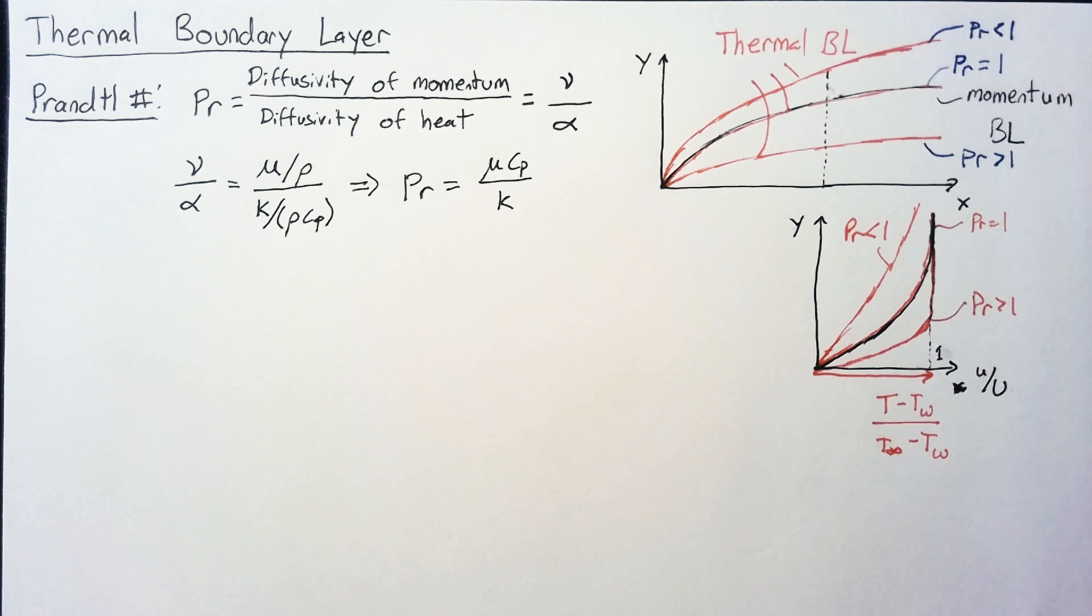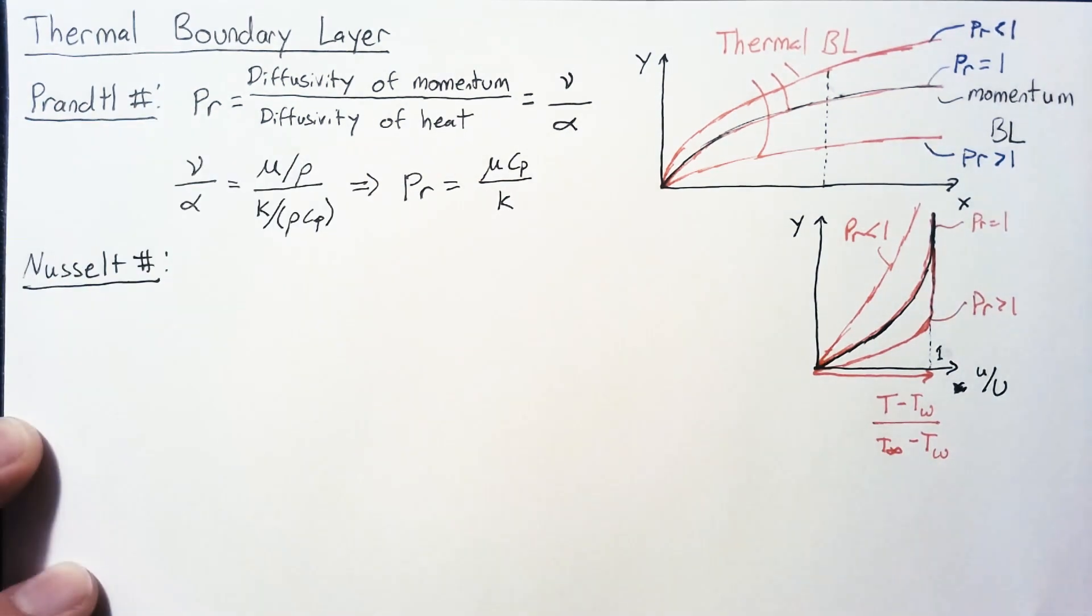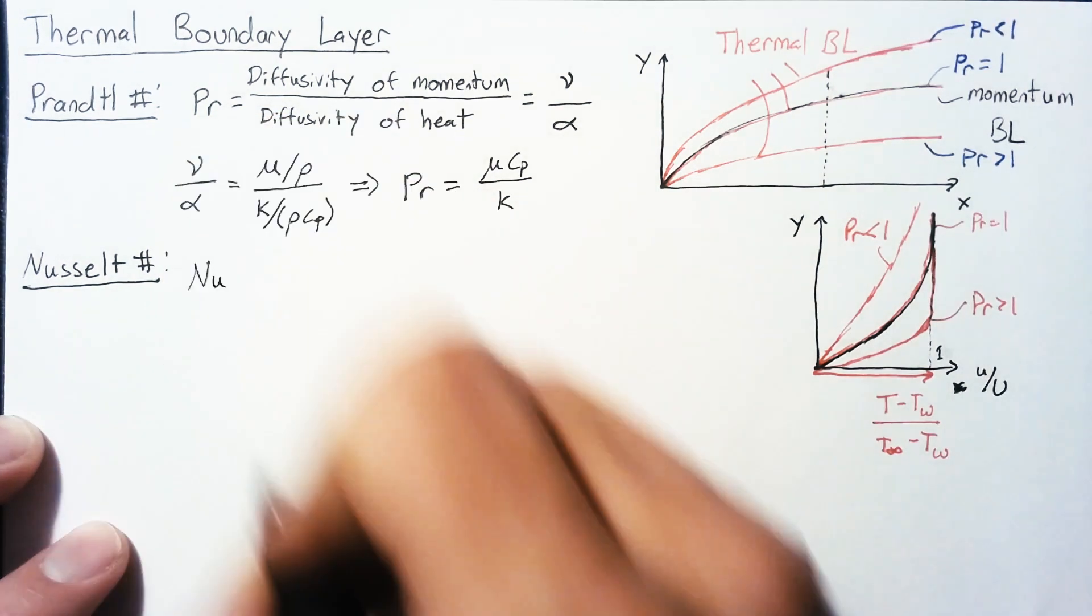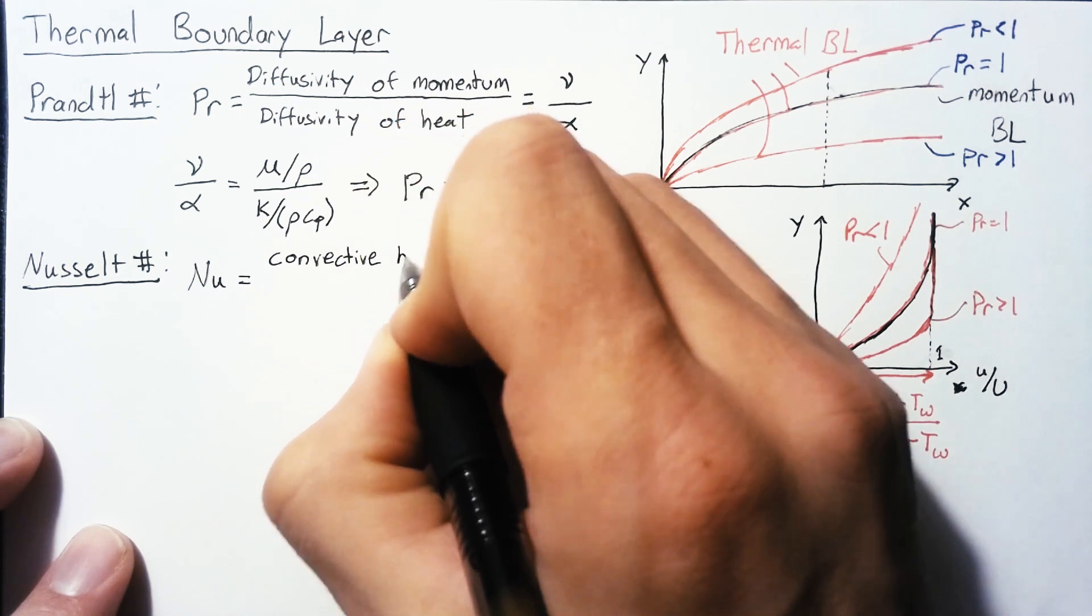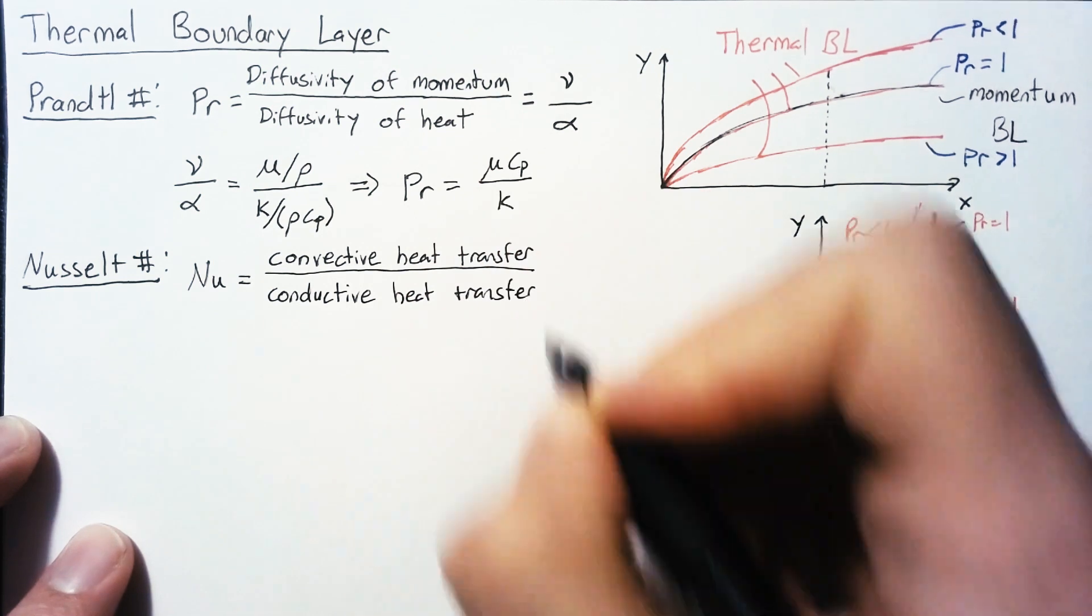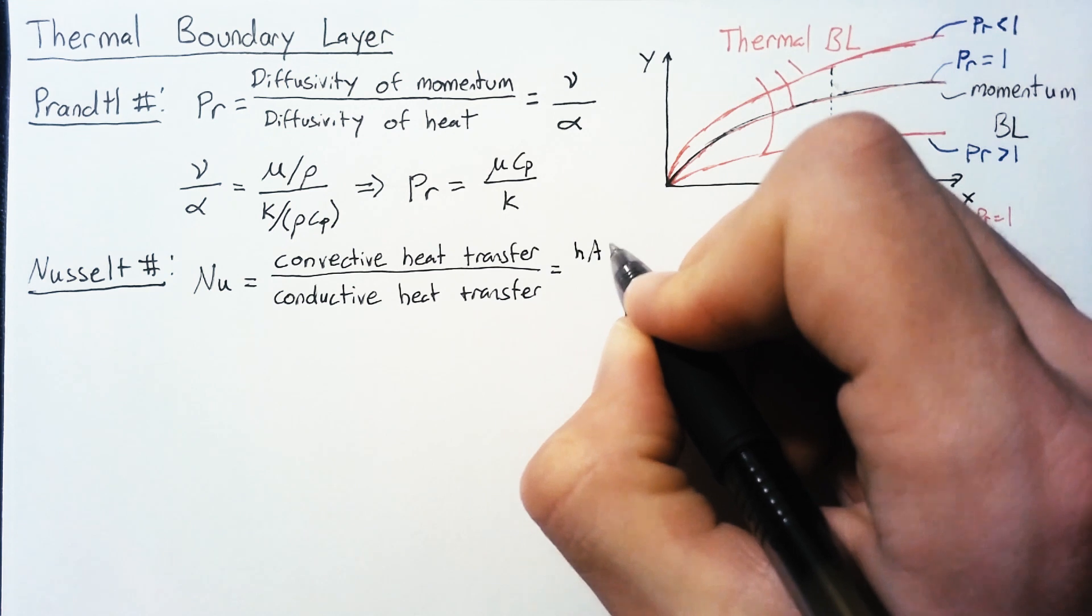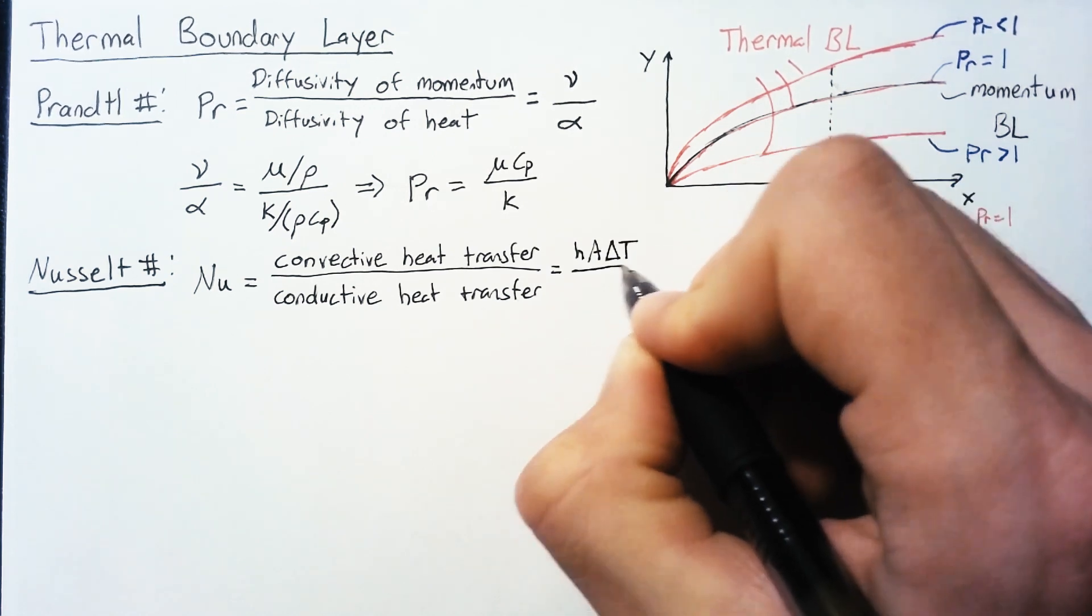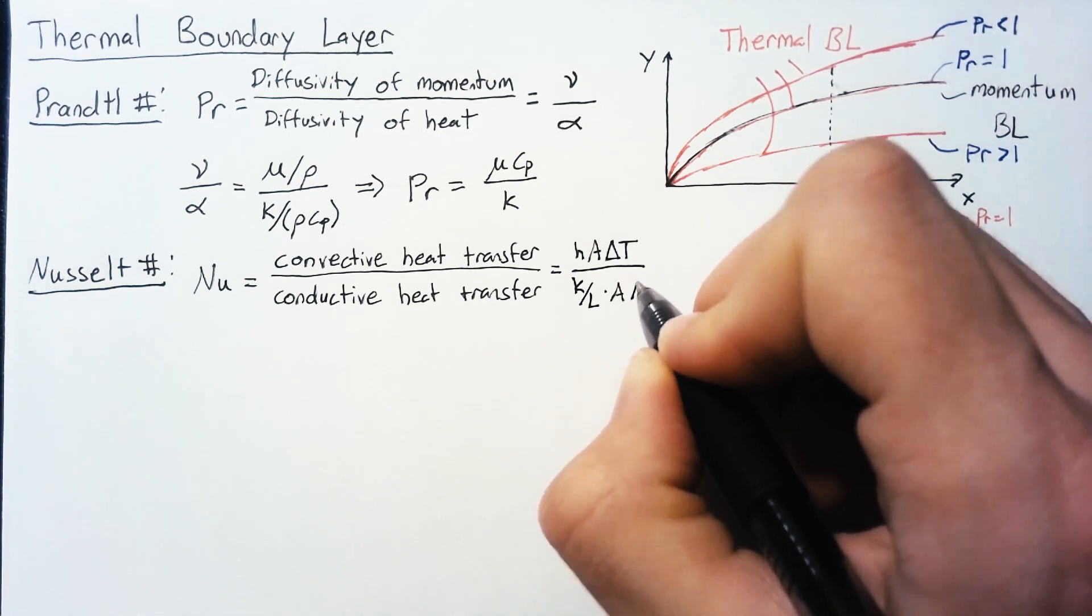What we're really interested in is the heat flux and the heat flow on this flat plate. The way we get there is something called the Nusselt number, and we use Nu for the Nusselt number. The Nusselt number is simply a ratio of the convective heat transfer and the conductive heat transfer. The convective heat transfer we can write as H times A times delta T.